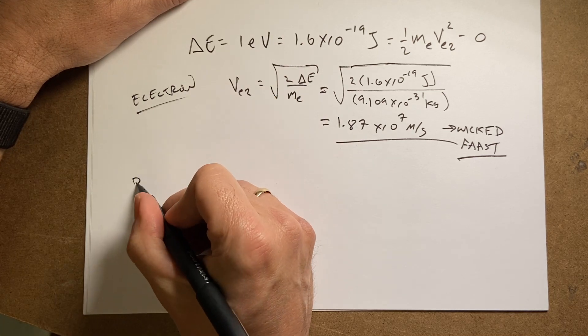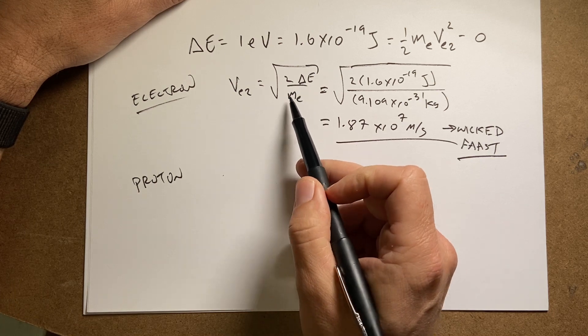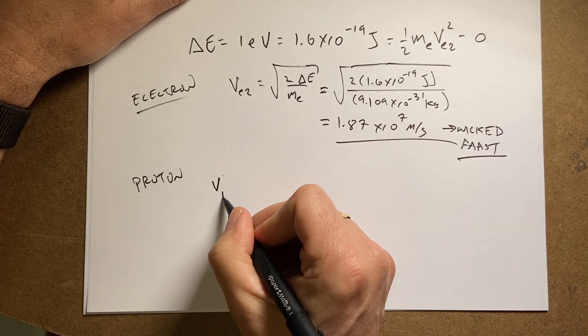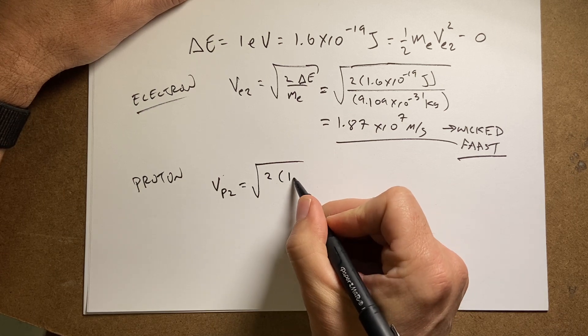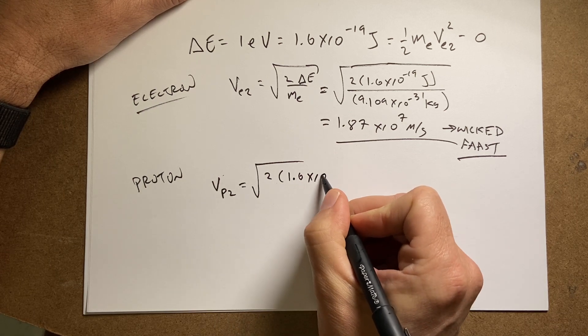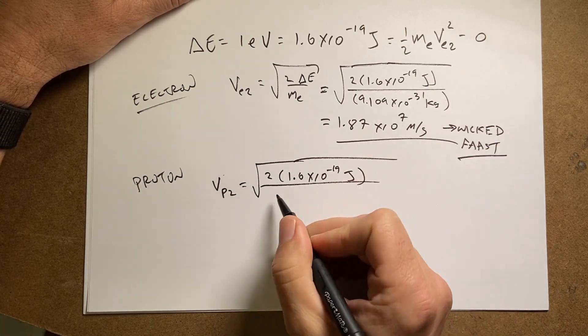Now what about the proton? Well, what changes if I do the proton? The only difference is this mass. So for the proton, I'm going to get V proton squared is going to be the square root of two times the same change in energy, 1.6 times 10 to the negative 19th joules,